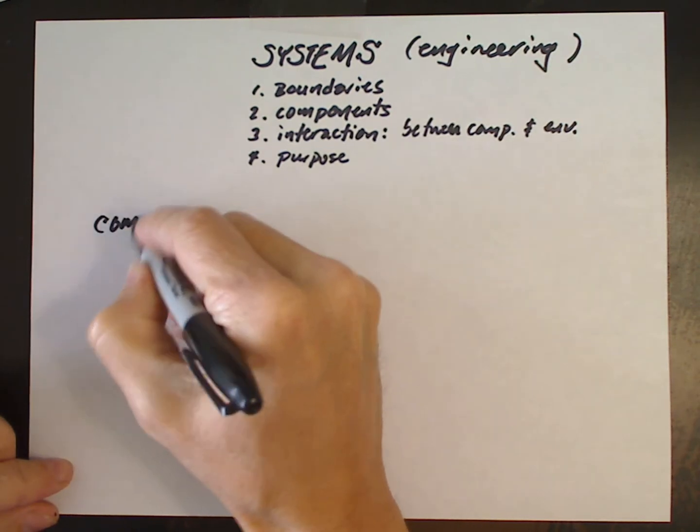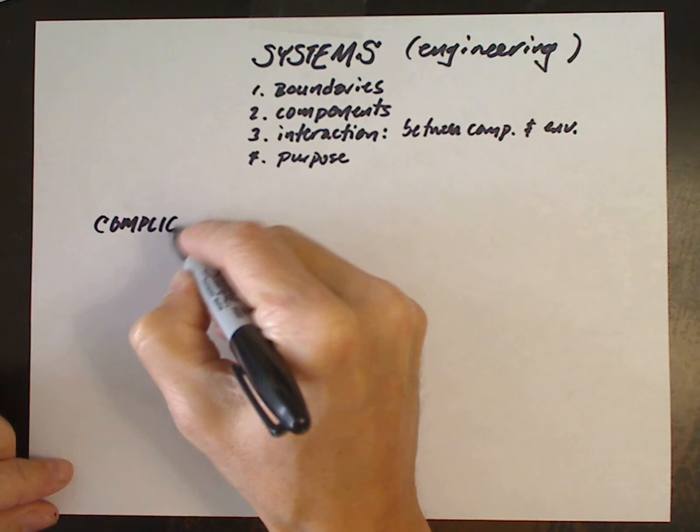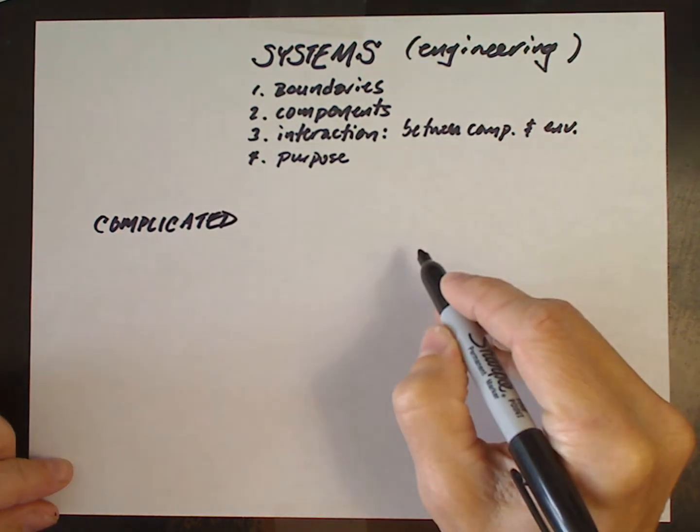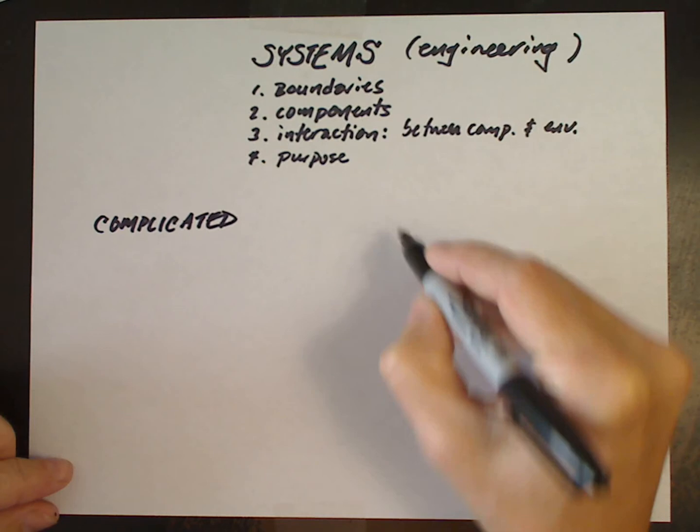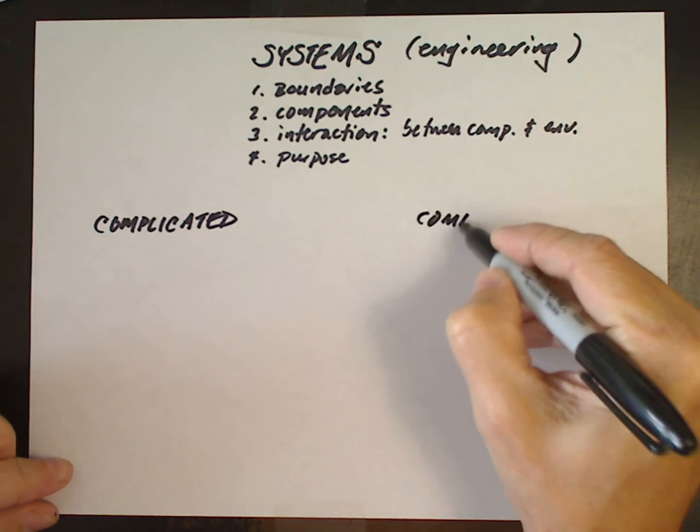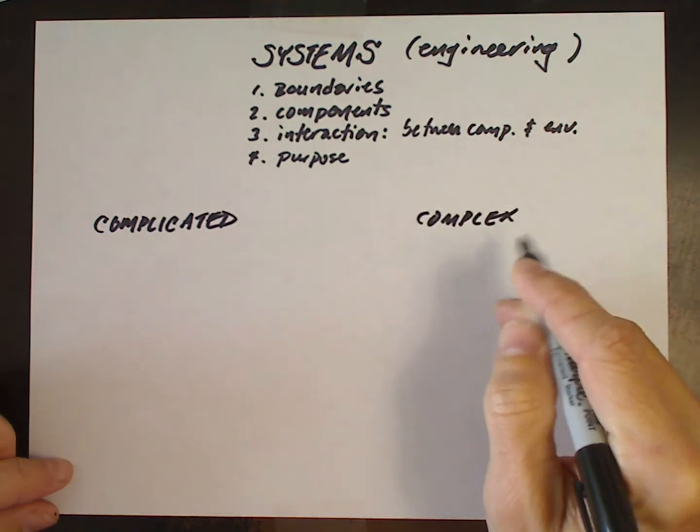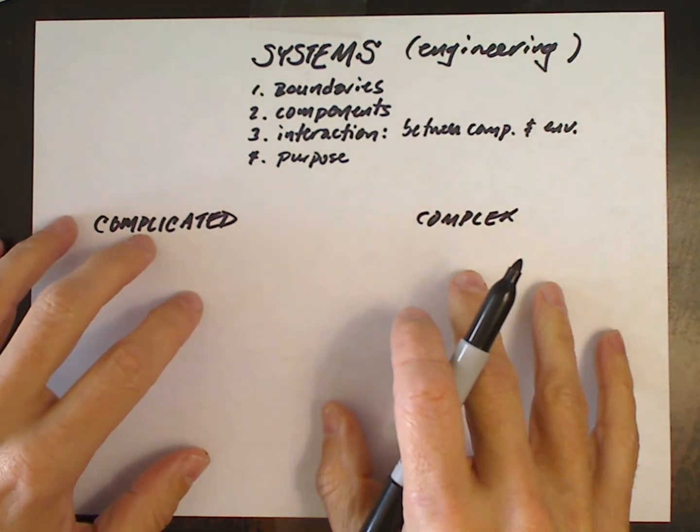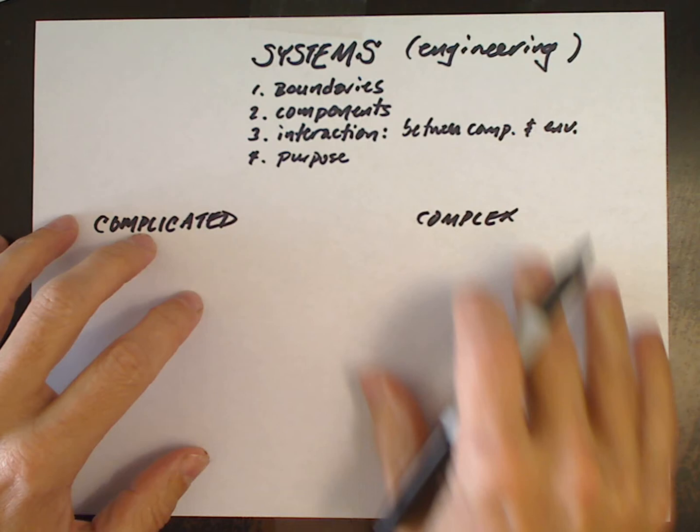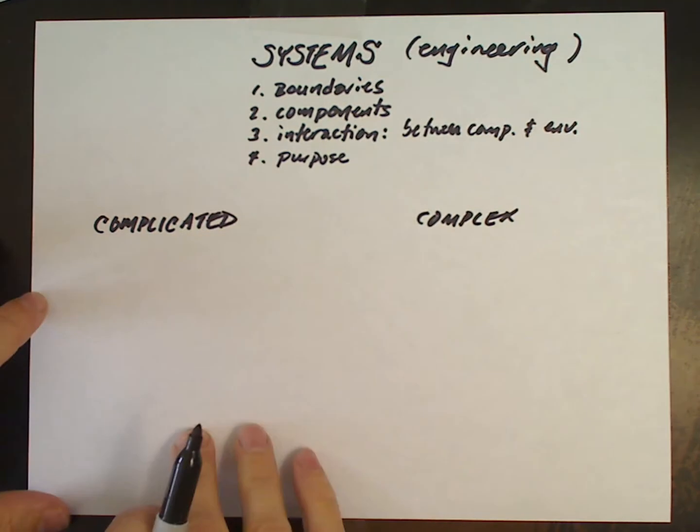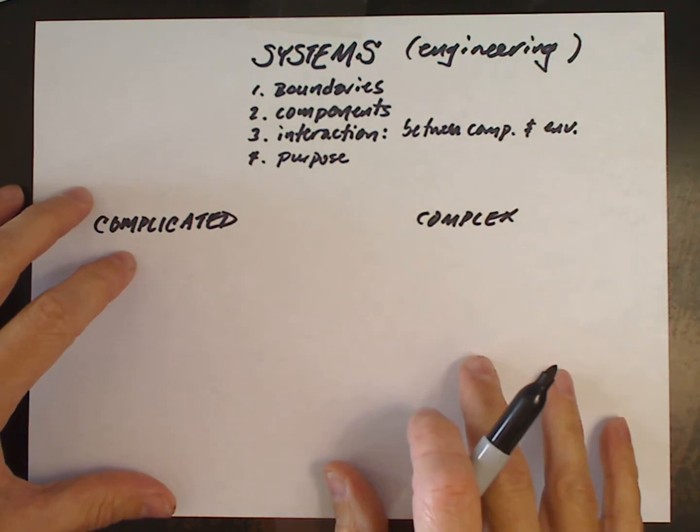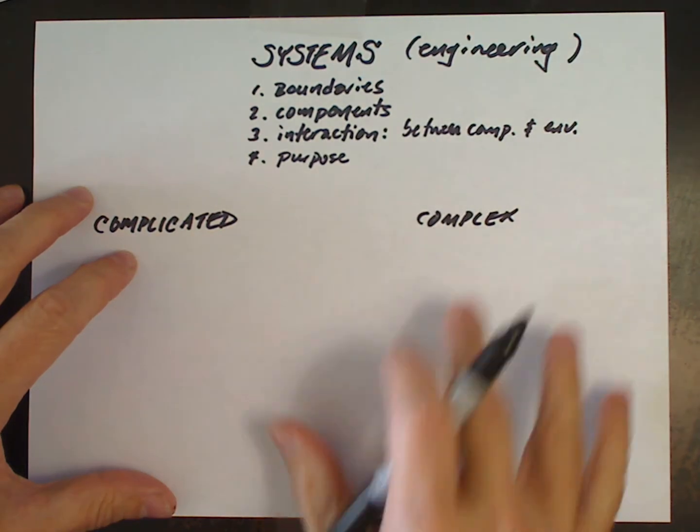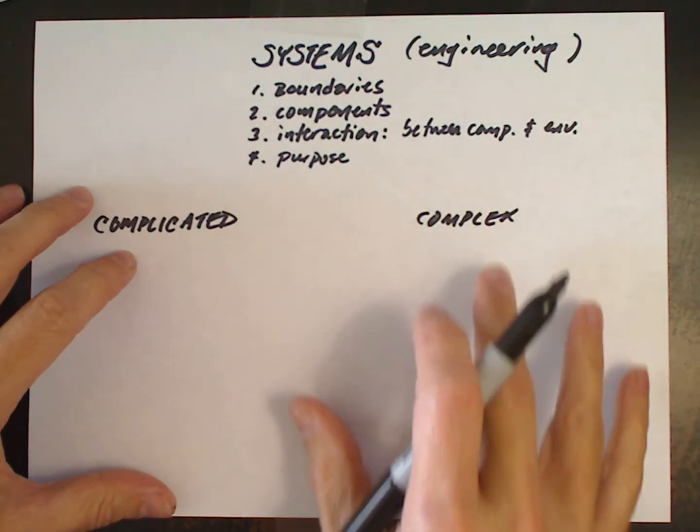In our study of engineering systems, it's helpful to understand the distinction between complicated and complex systems. The reason this is helpful is because if we confuse systems that are complex for those that are only complicated, there's going to be a lot of phenomena that we're unable to explain. We'll wind up confused because we'll be thinking about the system in the wrong way.